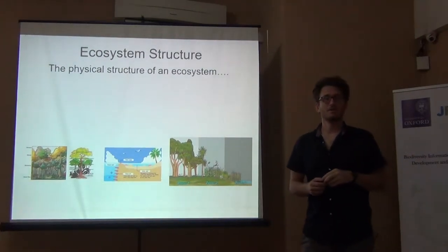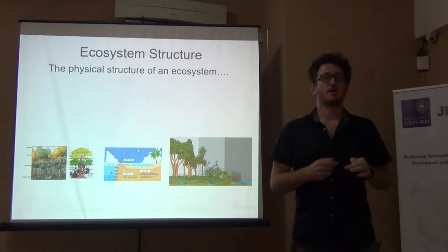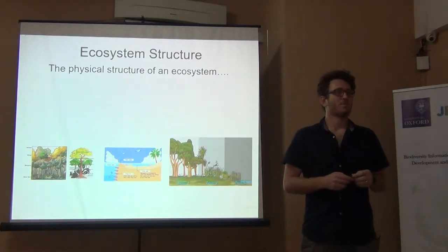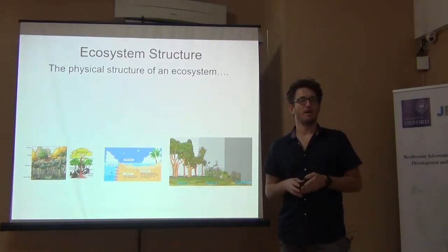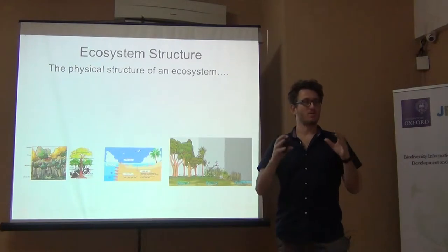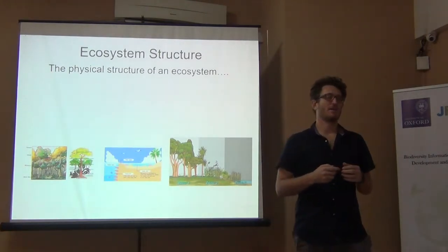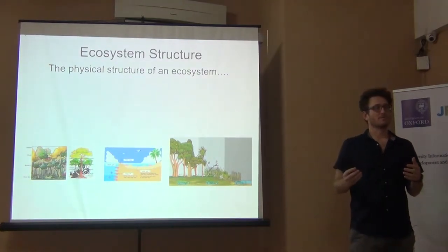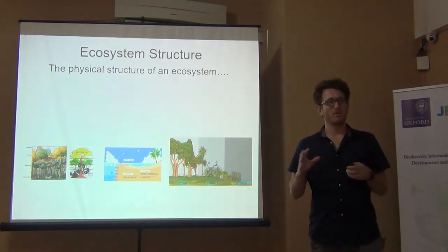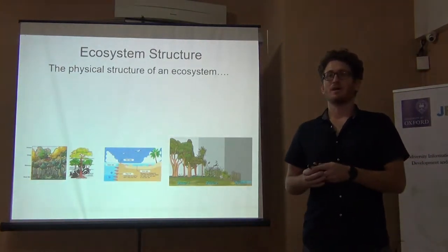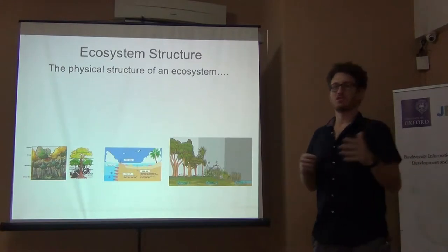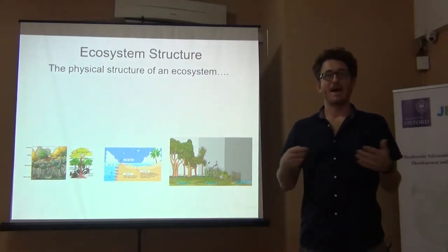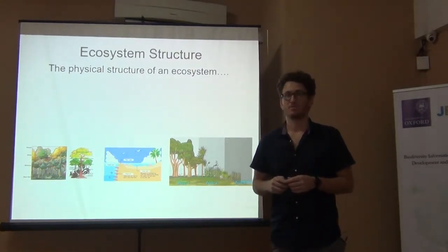So we just talked about ecosystem structure. We looked at how there's both the structure of trophic levels — the ways that organisms are arranged in an ecosystem — and now we're going to talk about the actual physical structure of an ecosystem: the way in which the physical components are organized in space. Both of those can tell us a lot about how an ecosystem functions, and that in turn can tell us a lot about ecosystem services.